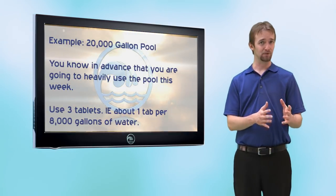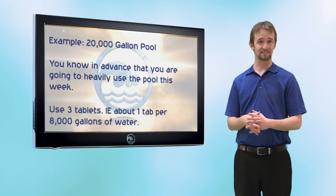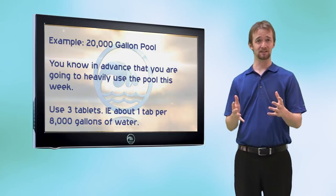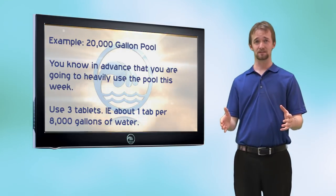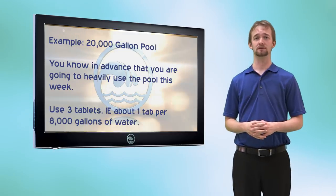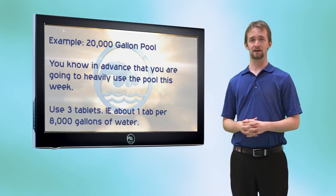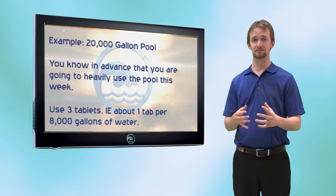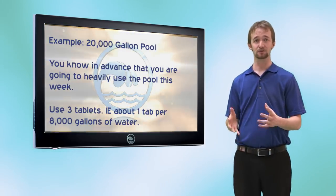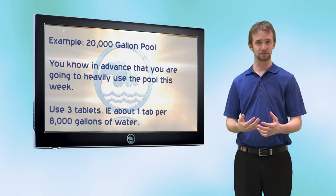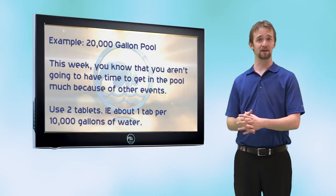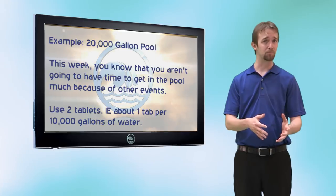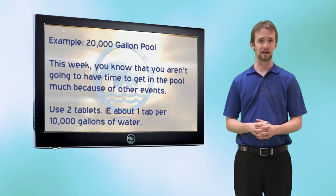So one tablet per 8,000–10,000 gallons — what does that mean in practice? Let's say in July you know there's a week where you'll have a bunch of people over swimming all the time. With a 20,000-gallon pool, use about three tablets that week because of heavy use — you'll also probably need to shock a couple of times. But the week after, if you're only going to be in the pool a couple of days, you probably only need about two tablets — one per 10,000 gallons.